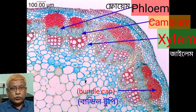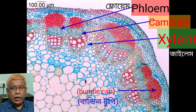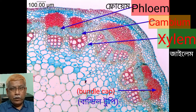Vascular bundles are conjoint, collateral, endarch, and open. They are arranged in the form of a ring around the pith.